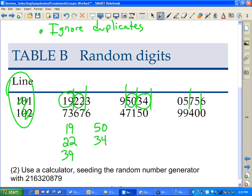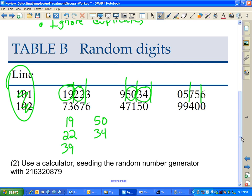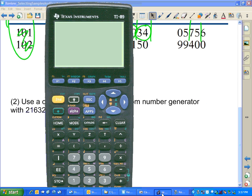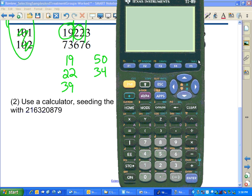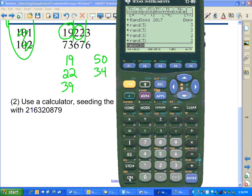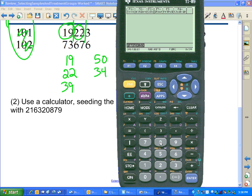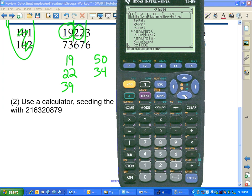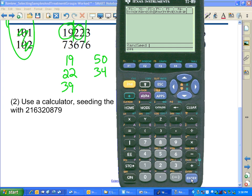There you have it. Doing it with a calculator, starting with a particular random seed. Choose the random seed to be 216320879. And that starts the random number generator. That was the equivalent of saying use row 101 of the random digits table. That's saying where do you start with the random numbers?